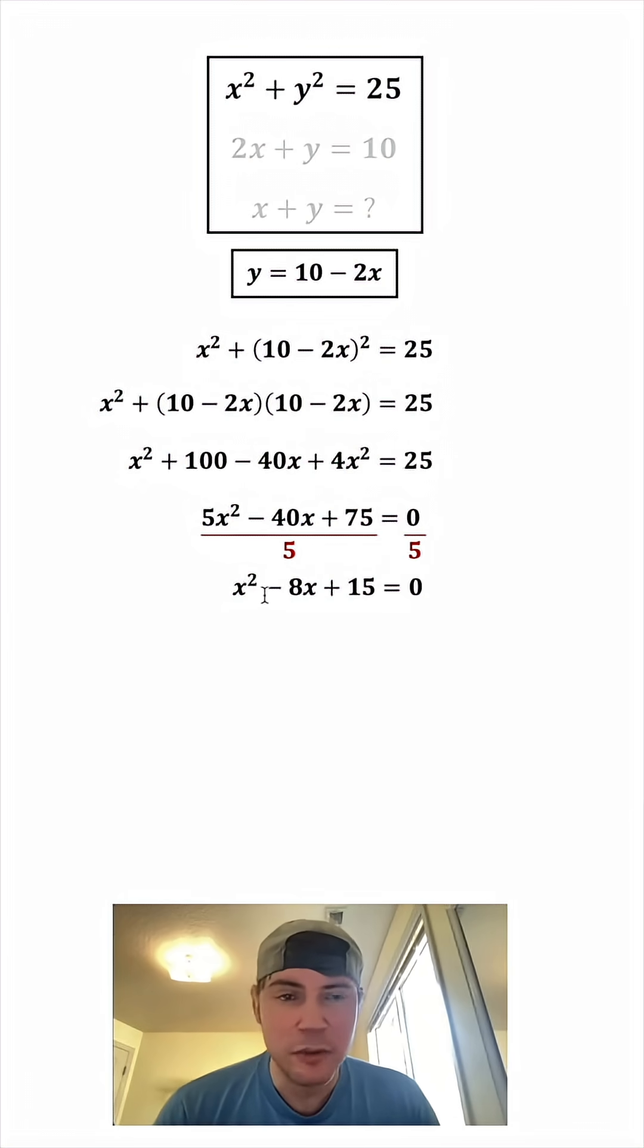And now to solve this, we want to factor. We want two numbers that will add to negative 8 and multiply to positive 15. Well, negative 3 plus negative 5 will give us negative 8, and negative 3 times negative 5 will give us positive 15. So these are the factors of this. So from here, if this equals 0, or if this equals 0, the whole thing will equal 0, because anything times 0 equals 0.